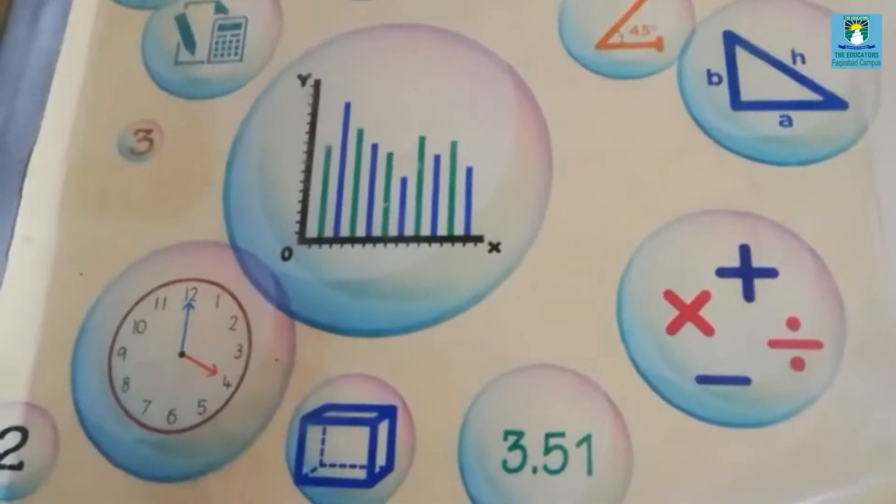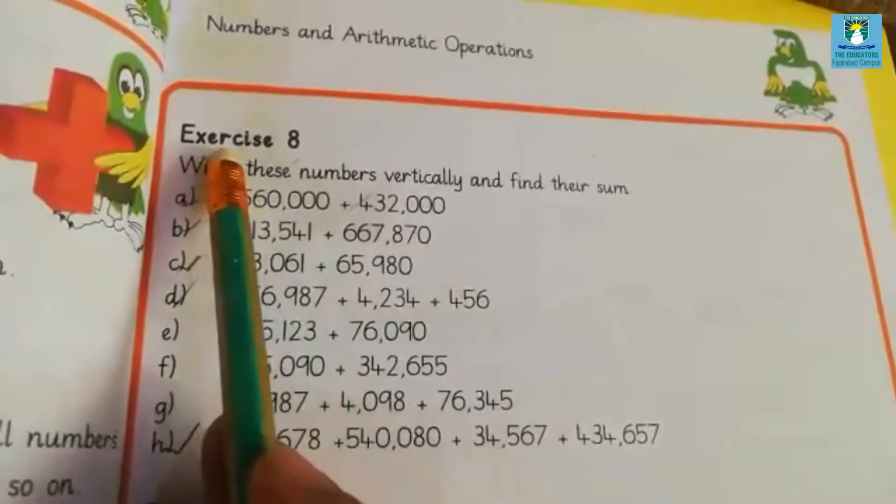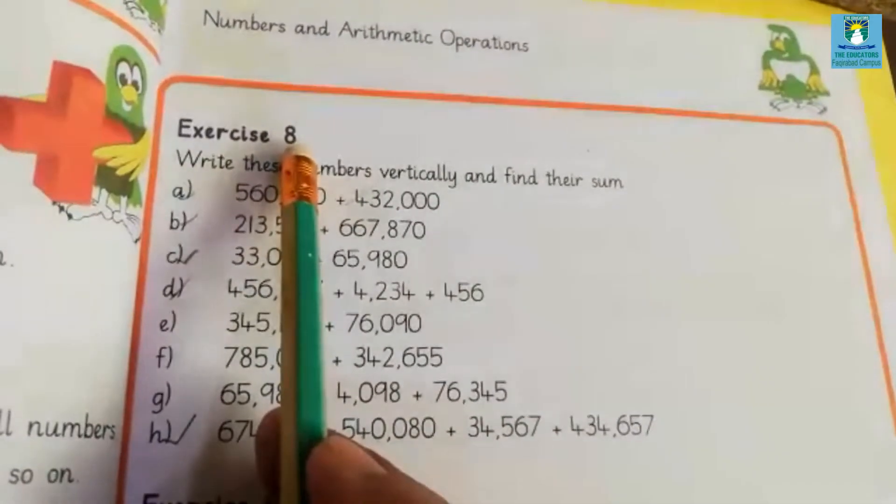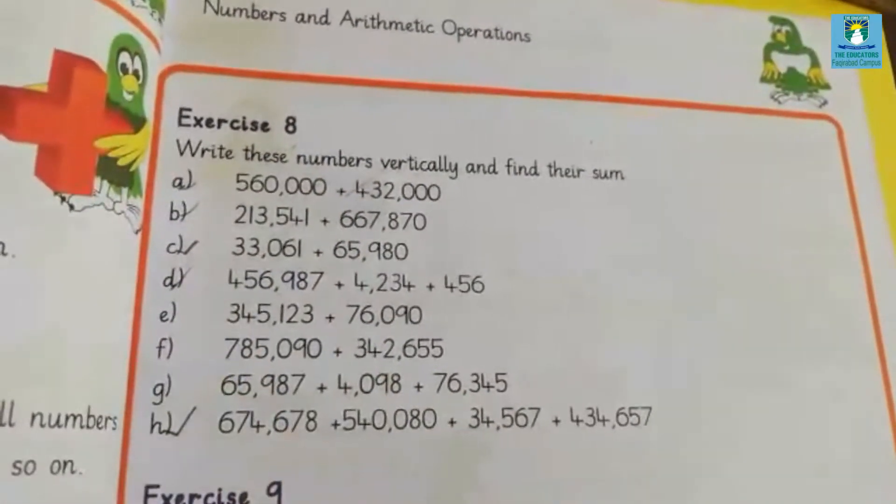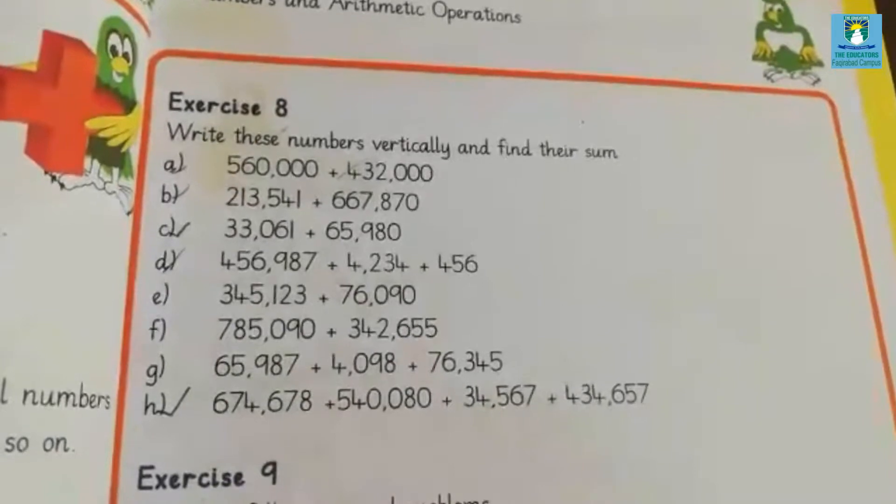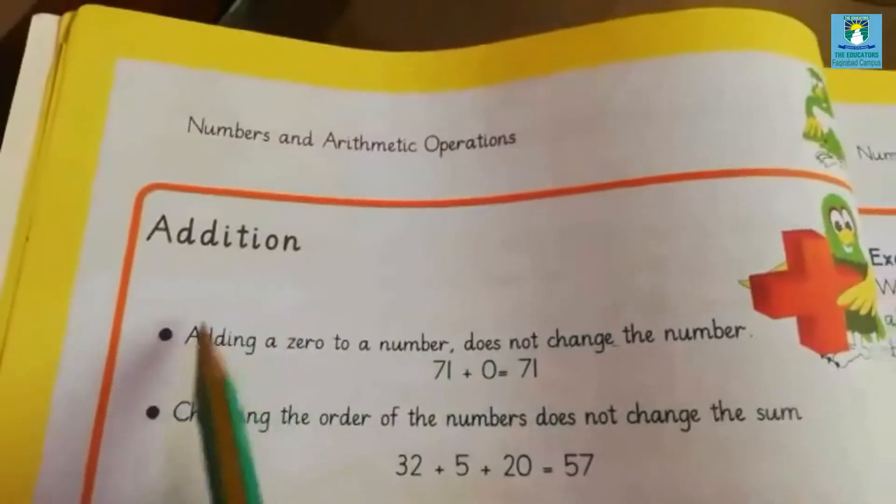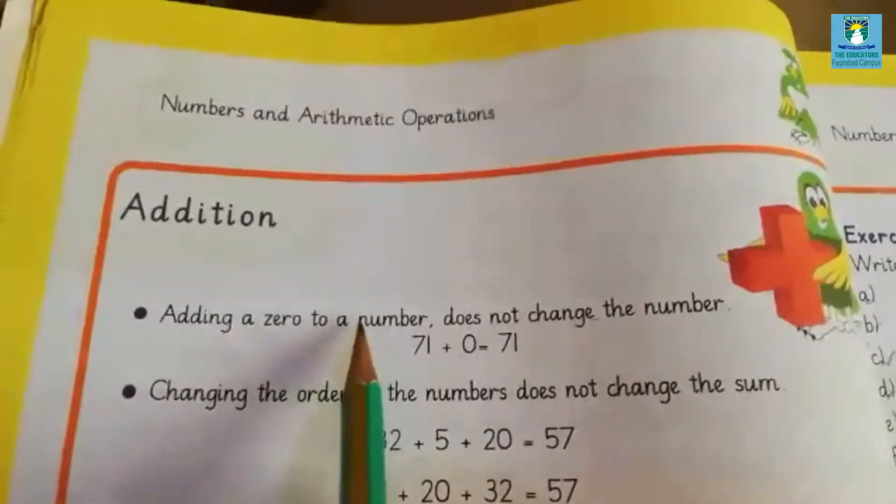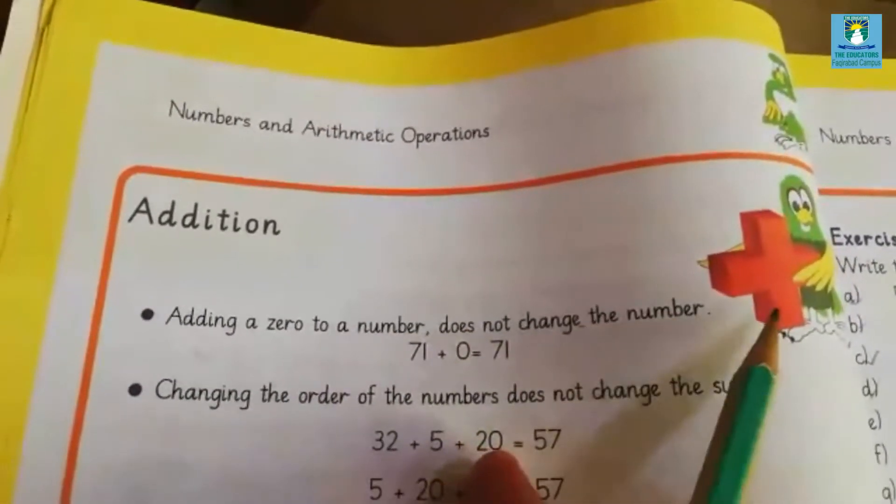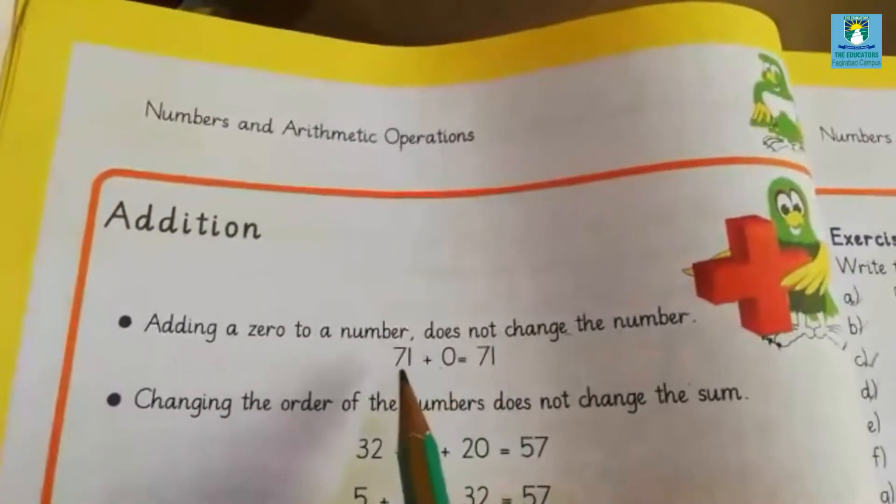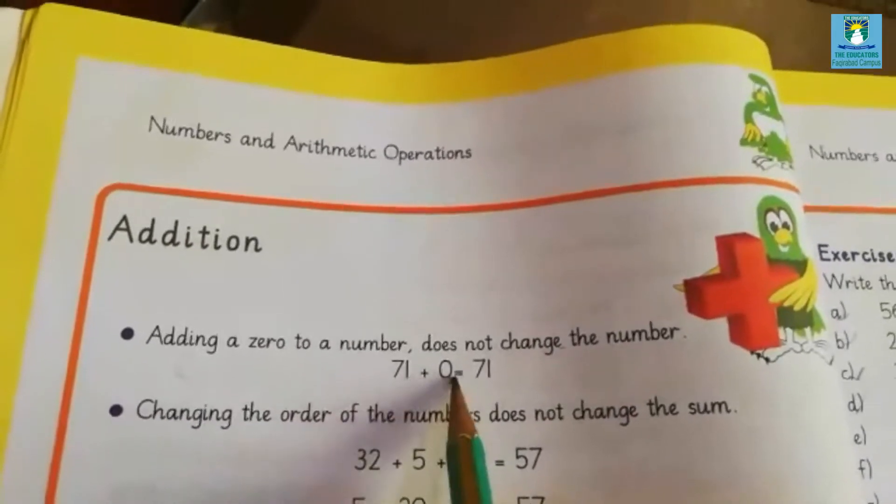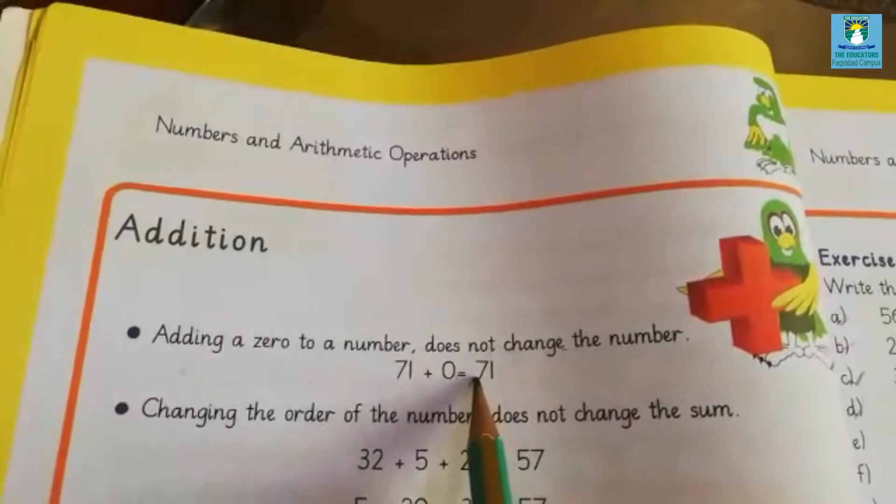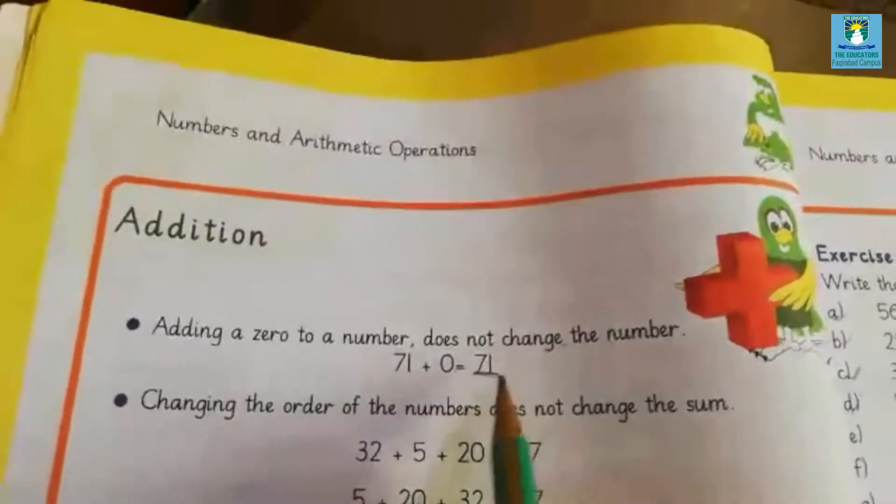Open your book page number 11. Before starting exercise 8, first we will read two properties of addition. Let's see what they are. Here are the two properties of addition. The first one is adding a zero to a number doesn't change the number. Look at here.